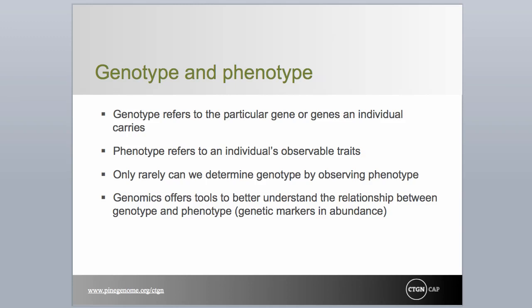Before leaving this module, we need to introduce a few more commonly used terms that can occasionally create confusion depending on the context of their usage. The term genotype can refer to the genetic condition of an individual at a single locus, at multiple loci, or simply the individual itself. Phenotype refers to traits we can see and measure — they may be morphological, physiological, or even metabolic in nature.